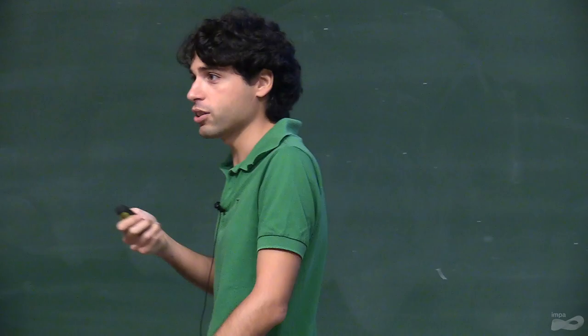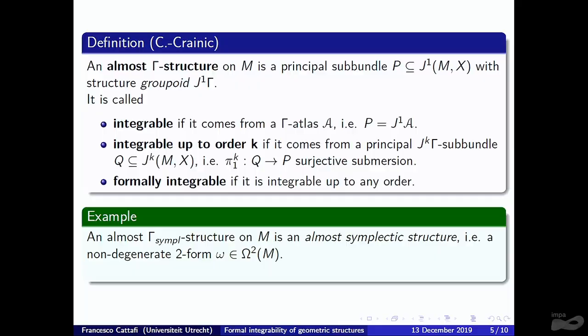In common examples this recovers what one expects: for the pseudogroup of symplectomorphisms, an almost gamma structure is precisely an almost symplectic structure — a non-degenerate two-form, not necessarily closed. The closedness condition is precisely equivalent to first-order integrability, which in this case is sufficient for all higher integrability and even full integrability. This is specific to this example but works for many others, including almost complex and almost contact structures.